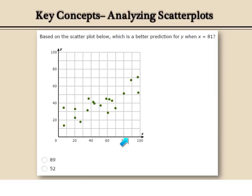When X is 81, and the two answers are 89 or 52. So, I'm going to come over to about where X is 81 and go up. Here is 89 is way up here, and 52 is somewhere around here. So, based on the information that they give us, the better prediction would be 52.